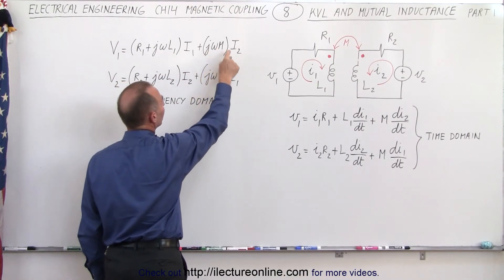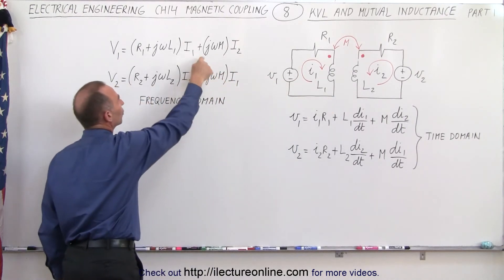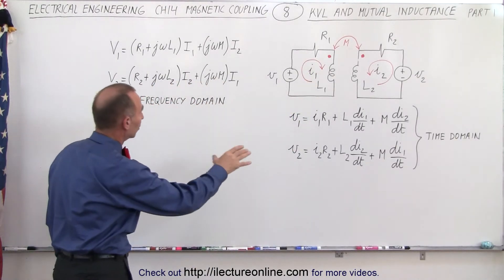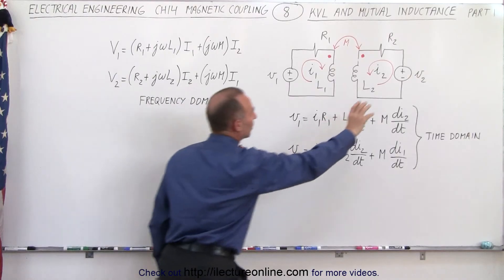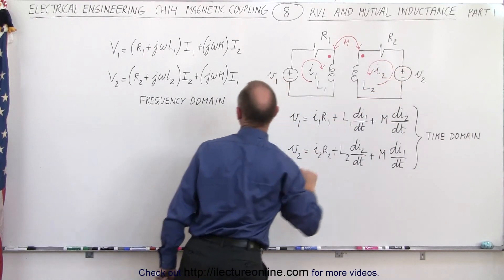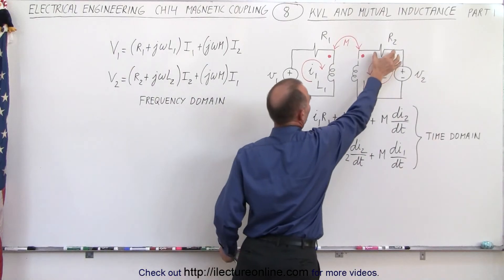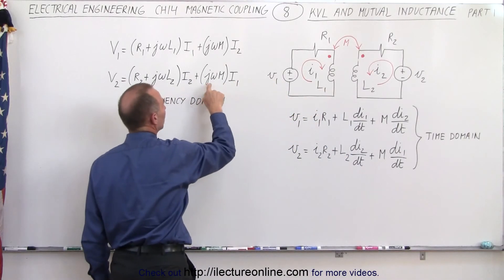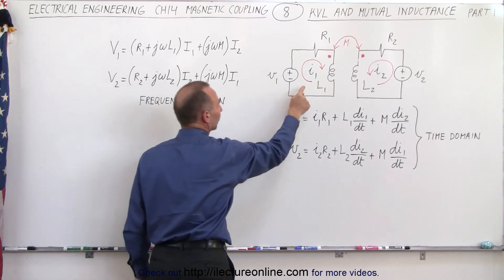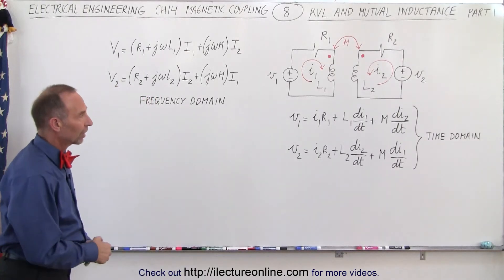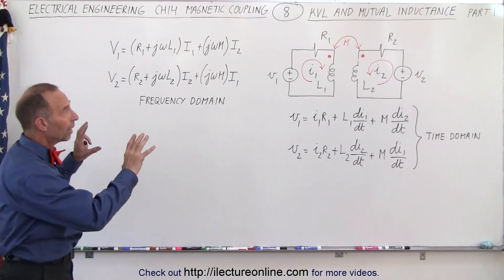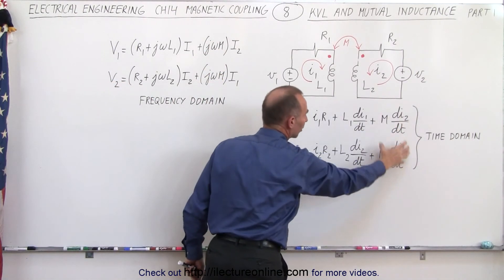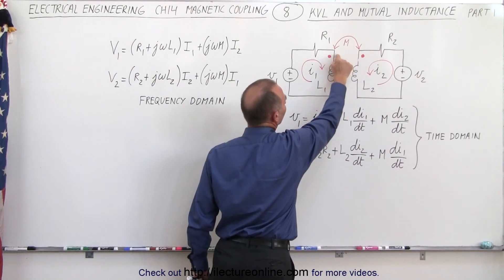So it's going to be jω times the mutual inductance times the current in the other circuit, which adds to the voltage drop in this circuit. The same applies for the second circuit in the frequency domain — the voltage drop across the voltage supply equals the sum of voltage drops across the resistor and inductor, plus the term caused by mutual inductance from the other circuit: jωM times the current in the first circuit. So when using KVL on mutually coupled circuits, you must include the term caused by the mutual inductance — add the term if the coupling is on the same side, subtract it when the coupling is on the opposite side.